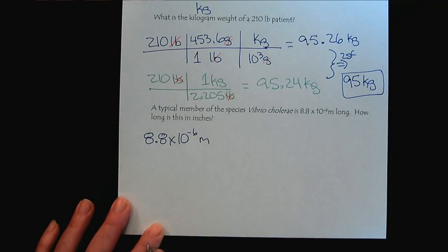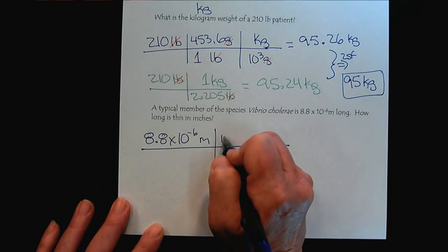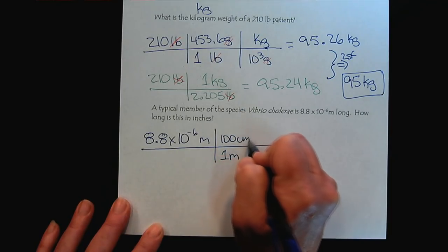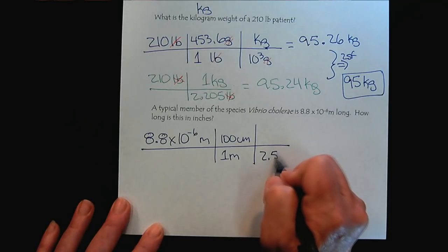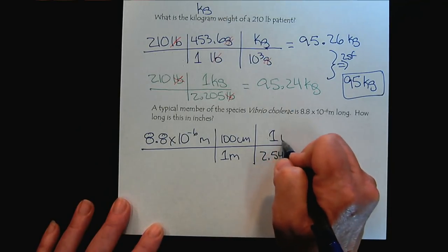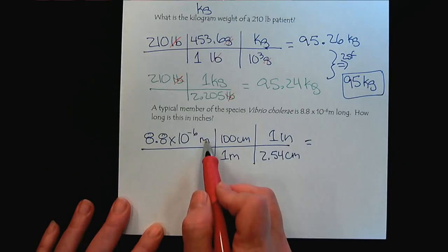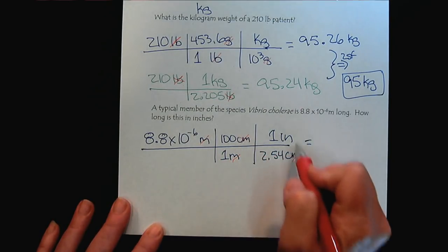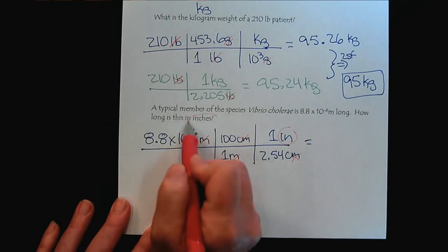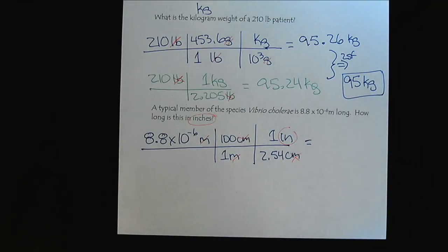And so for every meter, we would have 100 centimeters. And then for every 2.54 centimeters, 1 inch. So if we look at our units here, the meters cancel, and the centimeters cancel, and we're left with inches, which is what the question is asking for. So now we can punch this into our calculator.